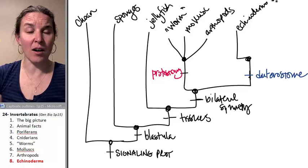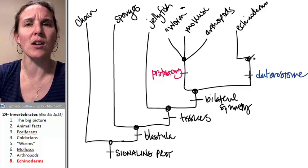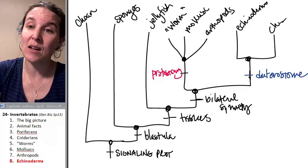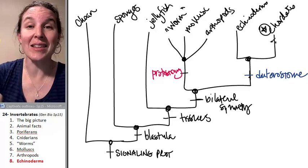Probably our quintessential group of echinoderms would be like sea stars. But then the other group of deuterostomes are the chordates, and chordates we're going to talk about in the next lecture.